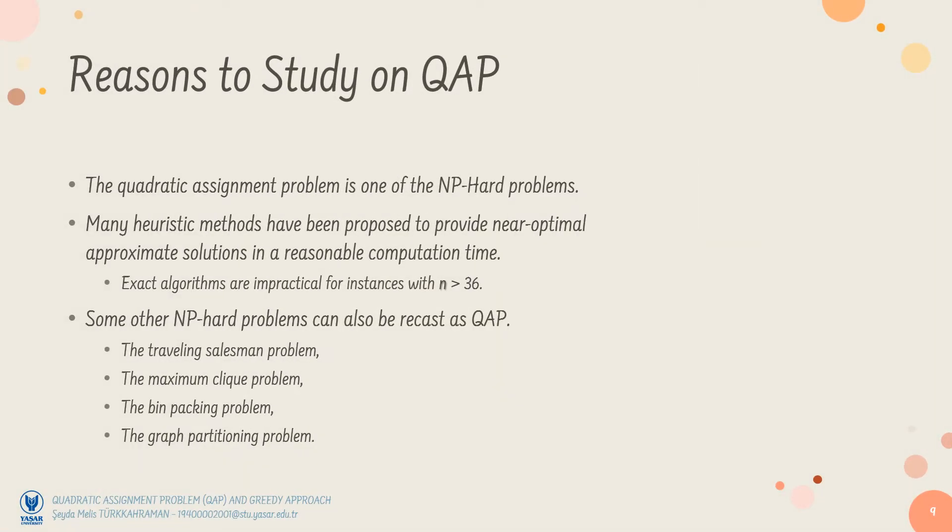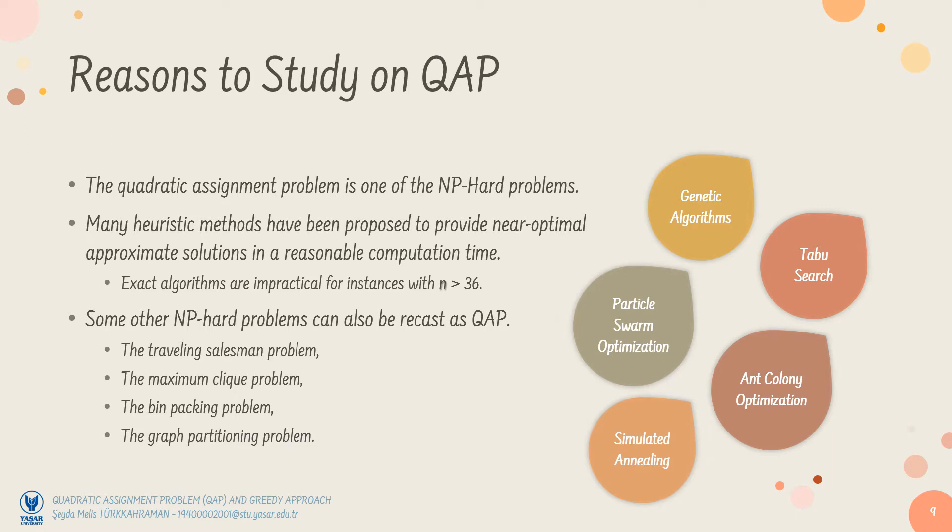We will talk in the definition part in details, that the QAP has a quadratic objective function and it falls within the NP-hard class. Since exact algorithms are impractical for the large instances of the QAP, many heuristic methods have been proposed to provide near-optimal approximate solutions in a reasonable computation time.